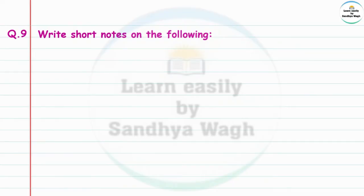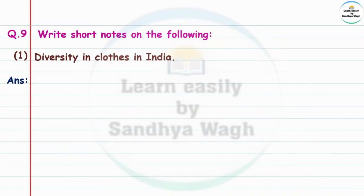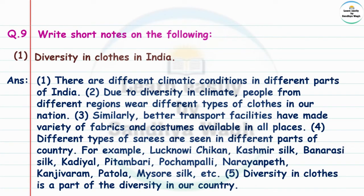Question 9: Write short notes on the following. Diversity in Clothes in India: There are different climatic conditions in different parts of India. In Kashmir there is a cold climate, while in the south the climate is hot. Due to diversity in climate, people from different regions wear different types of clothes in our nation. Better transport facilities have also made a variety of fabrics and costumes available in all places.